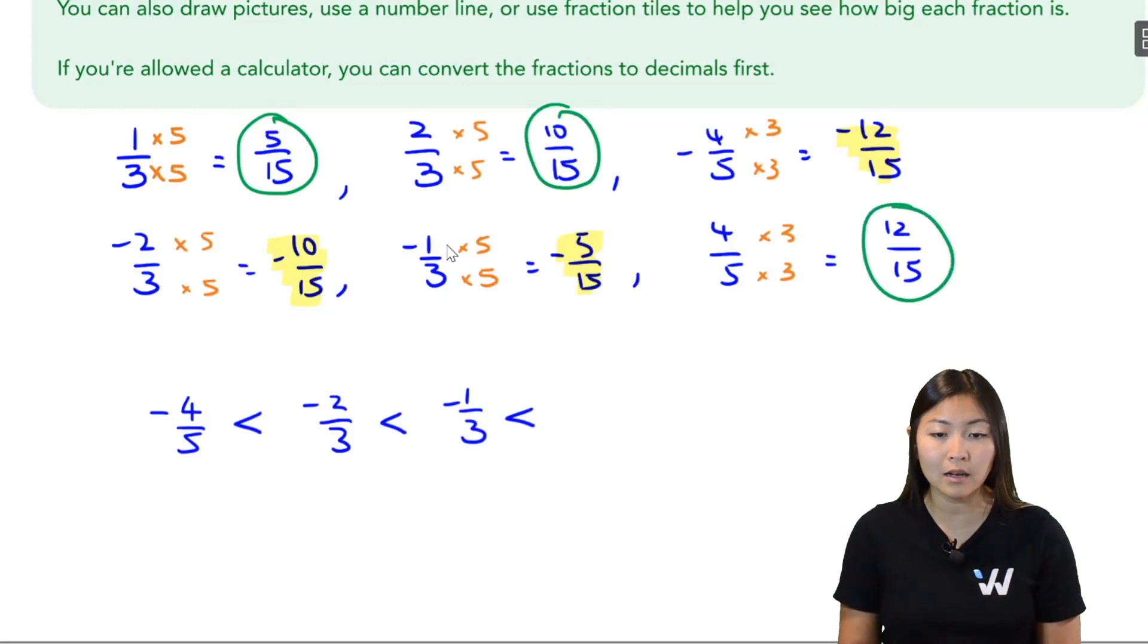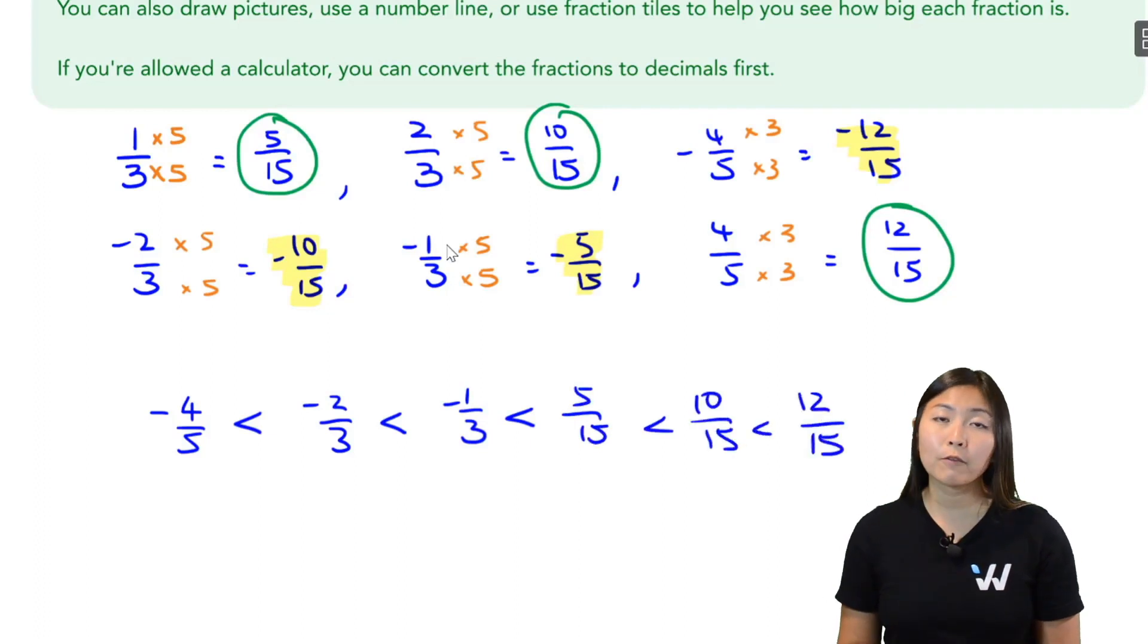So we have 5 out of 15, 10 out of 15, and 12 out of 15. Whenever I think fractions, I just think number of slices of pizza versus the whole pizza. 5 out of 15 means I get 5 out of the 15 slices. 10 out of 15 is 10 out of the 15 slices. This will generally help you visualize which one's bigger.